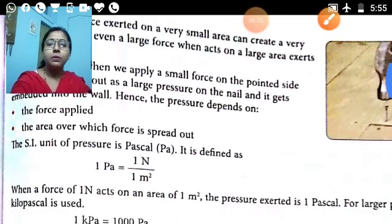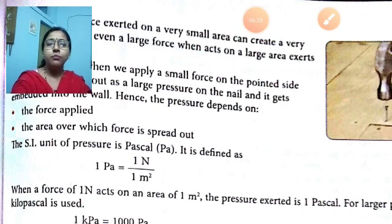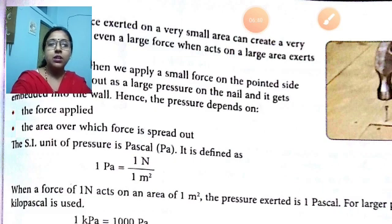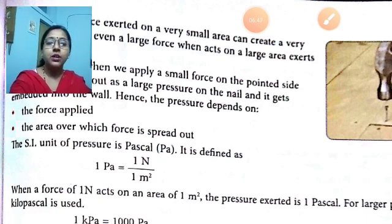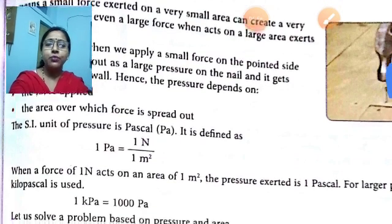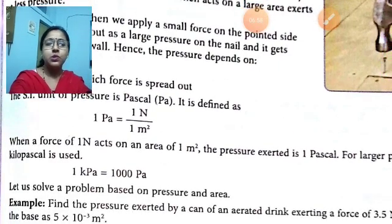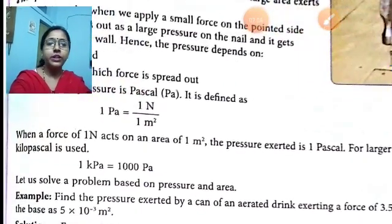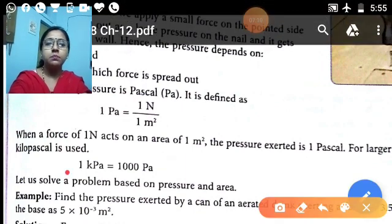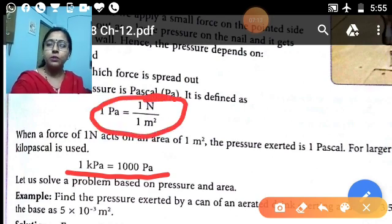The SI unit of pressure is Pascal, abbreviated Pa, named in honor of Blaise Pascal, a French scientist. It is defined as 1 Pascal equals 1 Newton divided by meter square. So when a force of 1 Newton acts on an area of 1 meter square, the pressure exerted is 1 Pascal. For larger values we use kilopascal — 1 kilopascal is equal to 1000 Pascal.